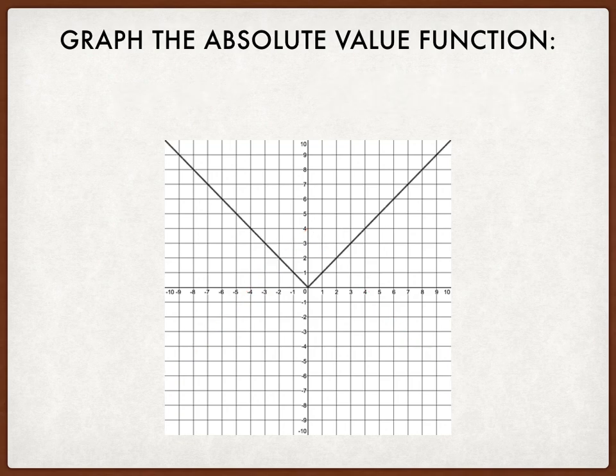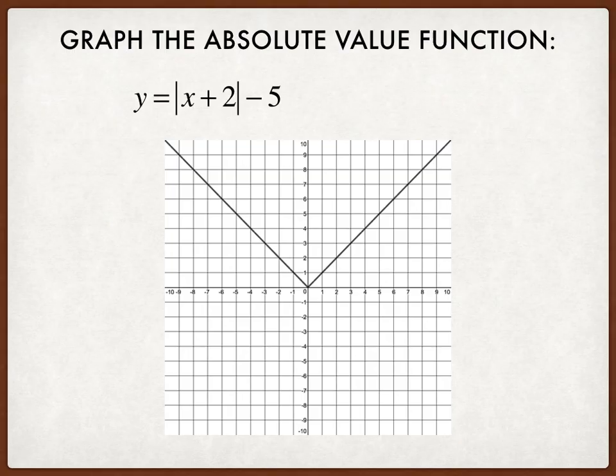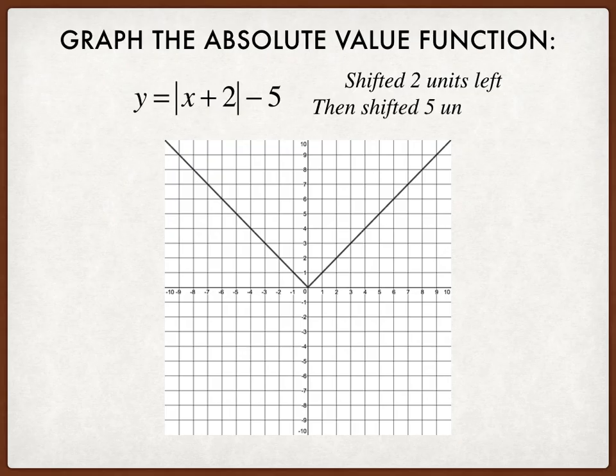Let's look at another example. Y equals the absolute value of x plus 2 minus 5. So there's going to be two shifts here. There's going to be a horizontal shift and then a vertical shift. The horizontal shift is going to be 2 units to the left because of that plus 2 inside the bars. And then it will be shifted 5 units down.